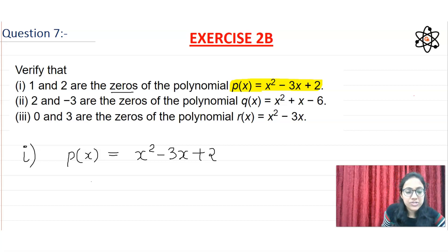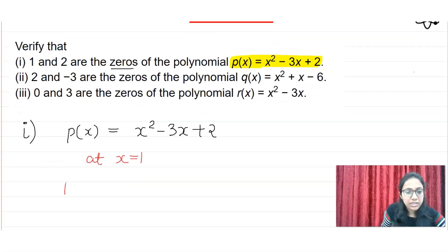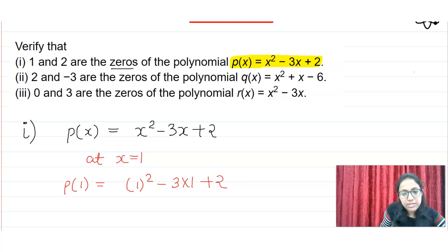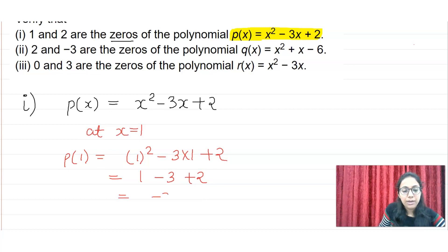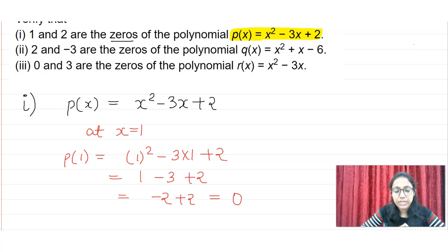So let's check at x = 1. P(1) = 1² - 3 × 1 + 2, so here I will get 1 - 3 + 2, which gives -2 + 2, and we will get 0.